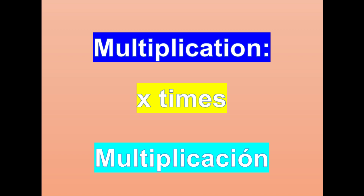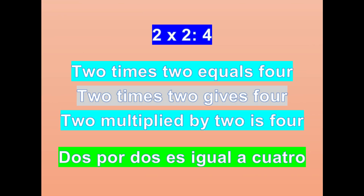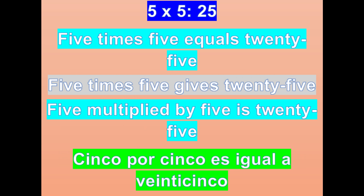Multiplication. Al multiplicar, diremos la palabra 'times'. Miremos estos ejemplos: two times two equals four. Or: two times two gives four. Otra manera sería: two multiplied by two is four. Five times five equals twenty-five. Or: five times five gives twenty-five. Five multiplied by five is twenty-five.